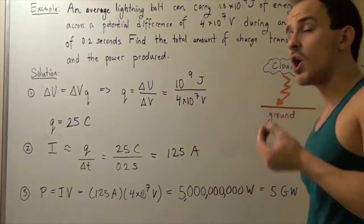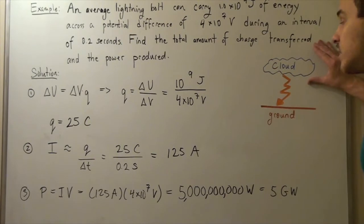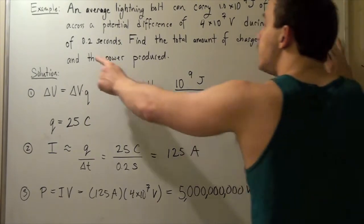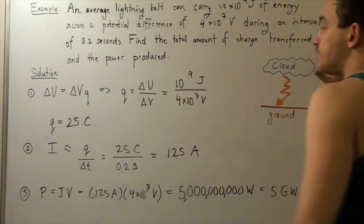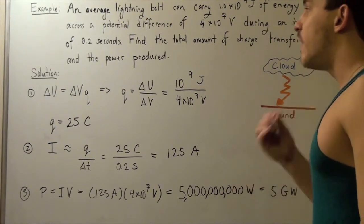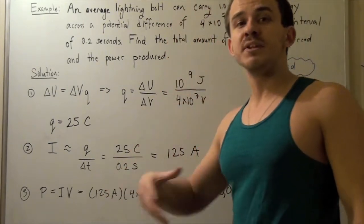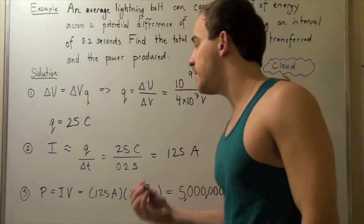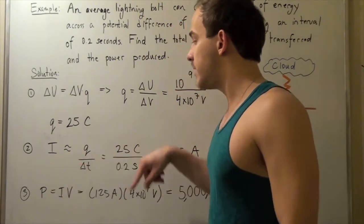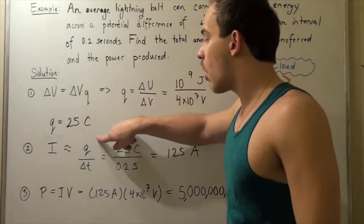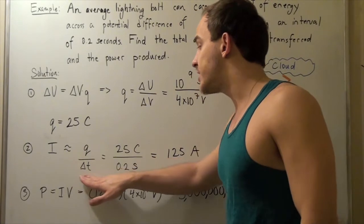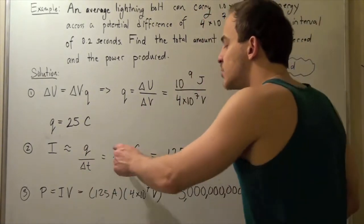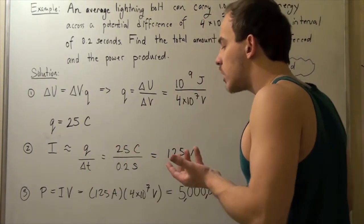So 25 coulombs of charge is transferred from our cloud to the ground in 0.2 seconds. So to find our current, we can simply approximate our formula to be: current is approximated by our amount of charge divided by change in time.